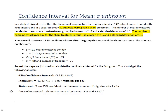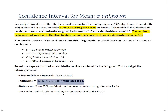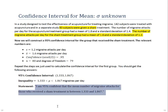Now we repeat the steps to find a confidence interval for the group that received the sham treatment. The sample standard deviation S is 1.2, the sample mean x-bar is 1.6 migraine attacks per day, N is 80, so the degrees of freedom is 79. The resulting 95% confidence interval is 1.333 to 1.867, written as 1.333 ≤ μ ≤ 1.867 migraines per day. I'm 95% confident that the mean number of migraine attacks for those who received a sham treatment is between 1.333 and 1.867.